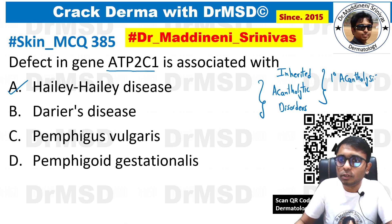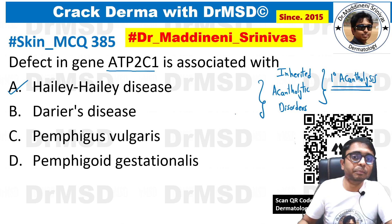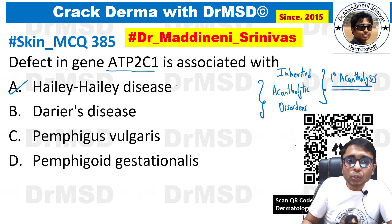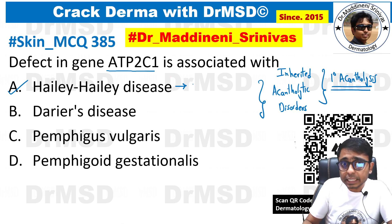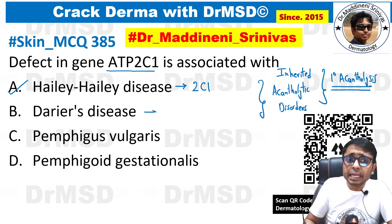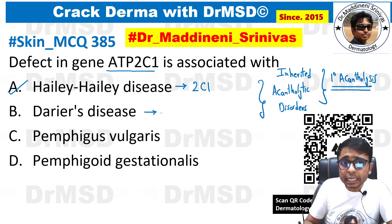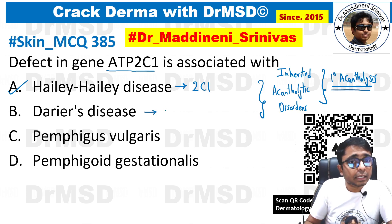I hope you all know the concept of primary and secondary acantholysis. Hailey-Hailey disease is an autosomal dominantly inherited condition due to the defect in ATP2C1, whereas Darier's disease is also autosomal dominantly inherited, but the defect is ATP2A2.